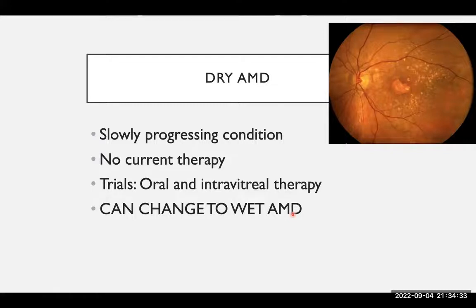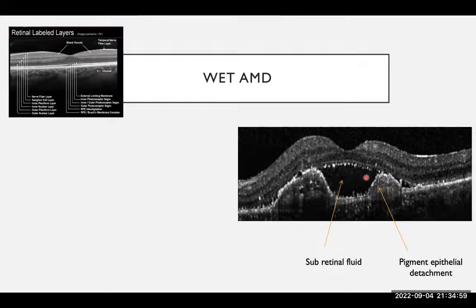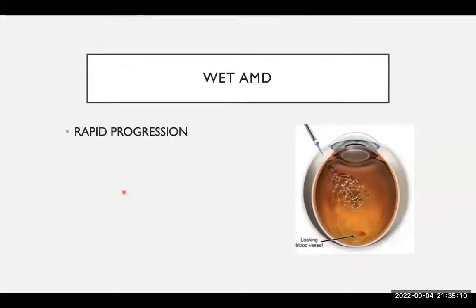Importantly, although dry macular degeneration is a slow-moving condition, it can change to wet macular degeneration. Wet macular degeneration is caused by abnormal blood vessels which leak their contents under the macula. Here we have a normal OCT on the top left, and you can see the effects of wet macular degeneration — the black areas underneath the macula represent the blood or fluid that the abnormal blood vessels cause. This is a much more rapidly progressing condition, and vision loss can be very quick.